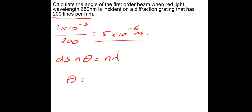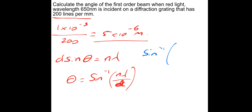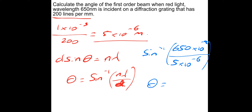Theta equals inverse sine of n lambda over D. Putting in numbers: inverse sine of (1 × 650 × 10⁻⁹) divided by (5 × 10⁻⁶). That gives us an angle theta of 7.5 degrees.